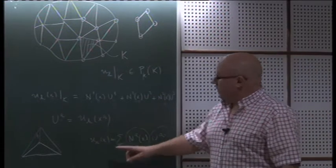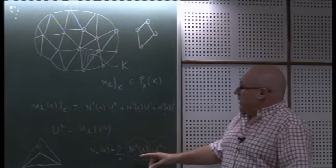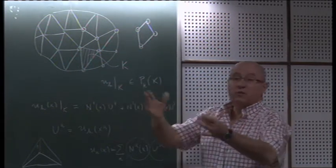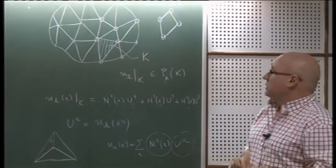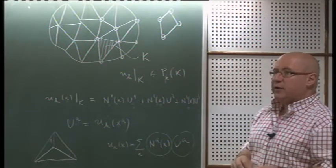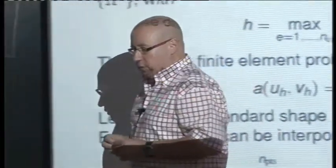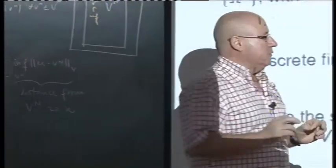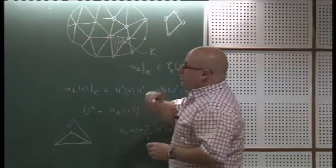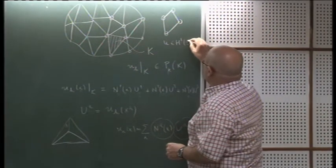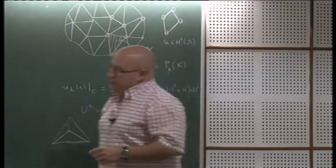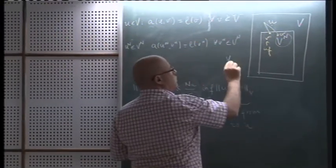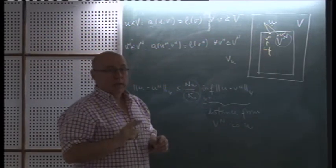In general, u(x) equals the sum over all nodes A of N_A(x) times u_A—the shape functions times the nodal values. The nodal values are the values of the unknown at the nodal points; the shape functions are the basis functions. This is not the only possibility—we could also interpolate using derivative values—but interpolating in terms of nodal values is the most common approach. A key property for the success of the finite element method is that the approximating space V_h must be contained in the full space V, which requires u_h to be in H1.